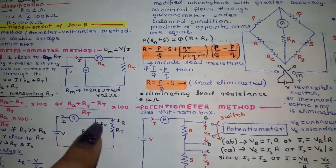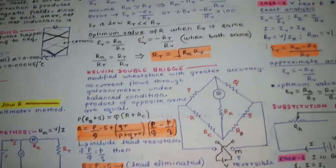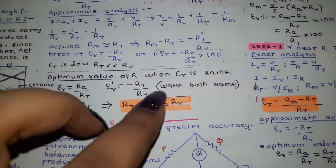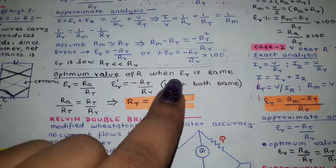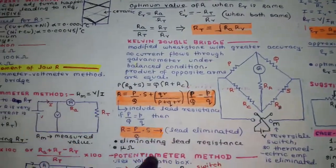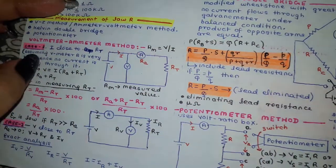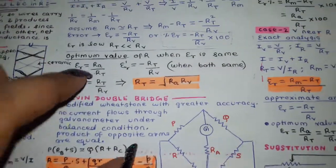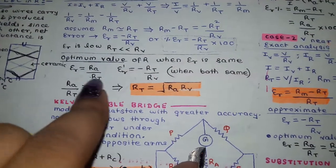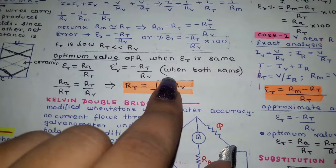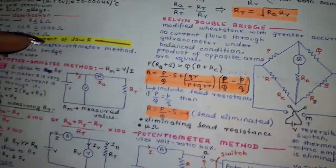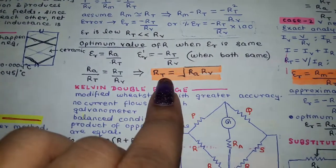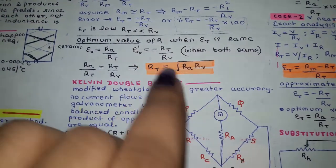For the optimum value of resistance, we assume that in both Case 1 and Case 2 the error has the same value. Under this condition, the unknown resistance is given by a specific formula. This gives the optimum resistance value where errors from both configurations are equal.